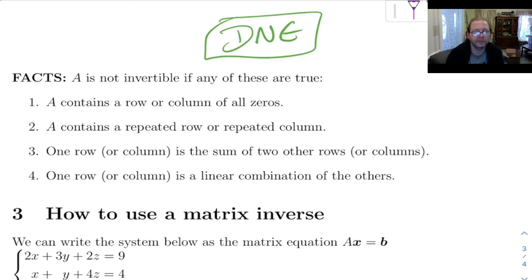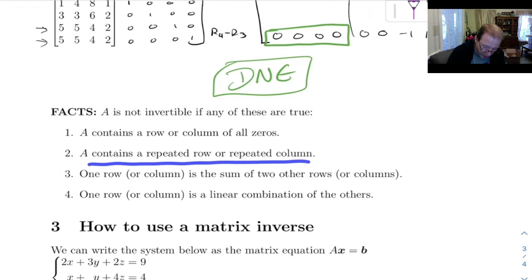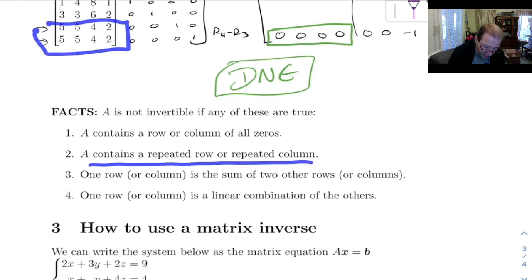If the matrix A contains a row or a column of all zeros, then it can't have an inverse. If it contains a repeated row or a repeated column, like what happened up here, then its inverse doesn't exist.